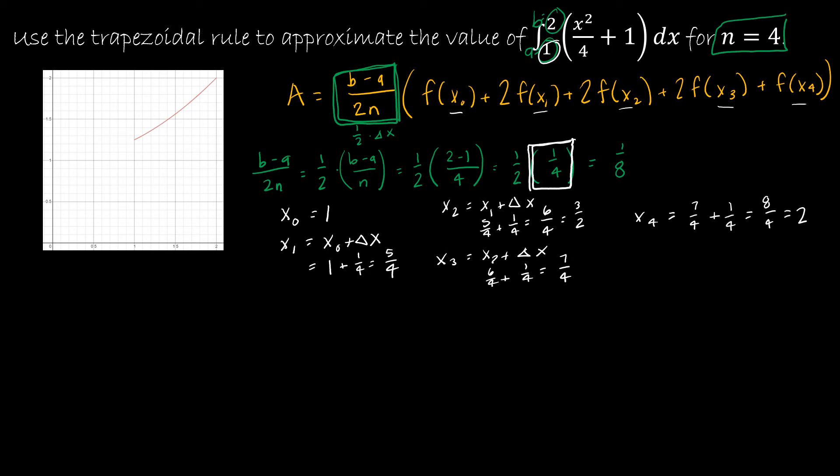So again, that's why I kept this delta x out, so that you understood that's how I'm going to get from one x value to the next. Now I'm just going to start plugging values into my formula. So my formula says take b minus a over 2n, which we discovered already was 1 eighth. And then I'm going to do f of 1 and 2 times f of 5 fourths and 2 times f of 3 halves or 6 fourths plus 2 times f of 7 fourths plus f of 2.